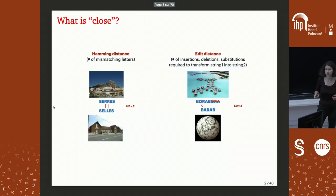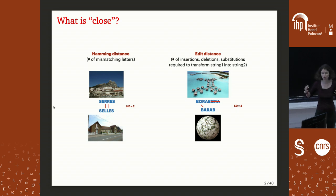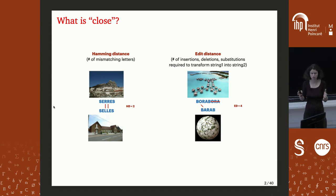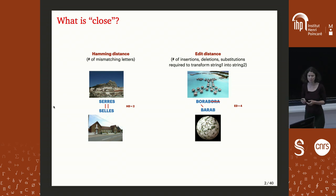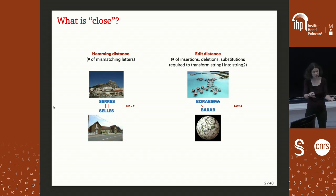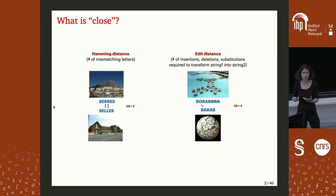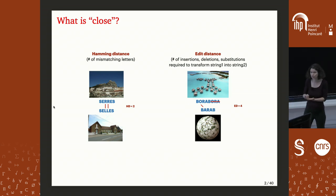Of course, if the pattern equals the substring they are close, but we can also define closeness using the Hamming distance or the edit distance. The Hamming distance is defined on strings of equal length and counts the number of mismatches. The edit distance is the number of insertions, deletions, and substitutions needed to transform one string into the other — for example, the edit distance between 'Bora Bora' and 'Barup' is four.